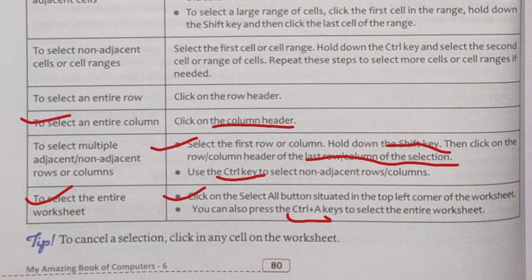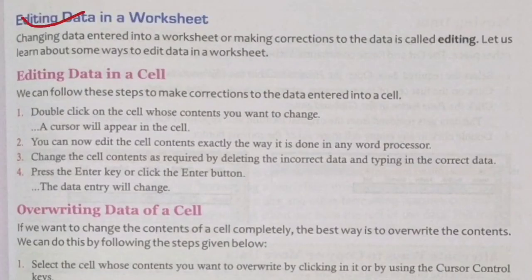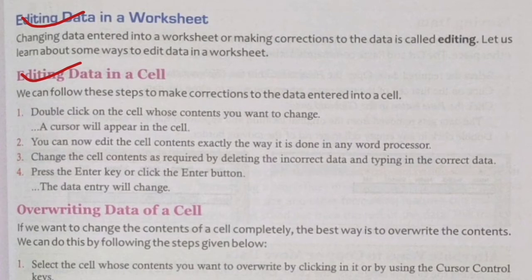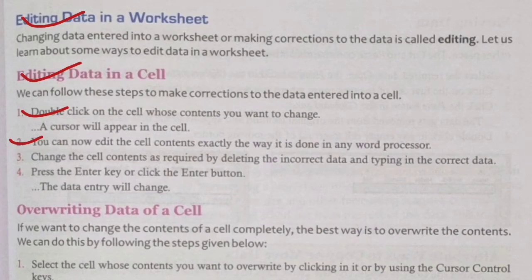The next heading is editing data in a worksheet. If we want to overwrite, copy, delete, or modify data, the first option is editing data in a cell. Double-click on the cell whose content you want to change. The cursor will appear and you can now edit the cell content exactly the way it is done in any word processor, deleting incorrect data and typing the correct data.